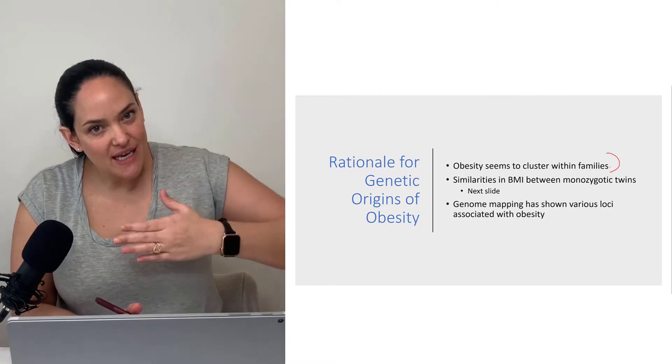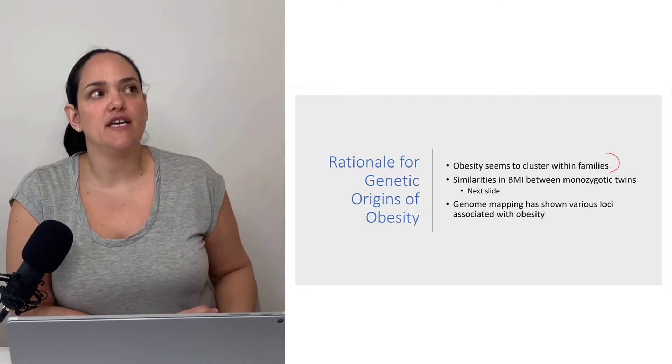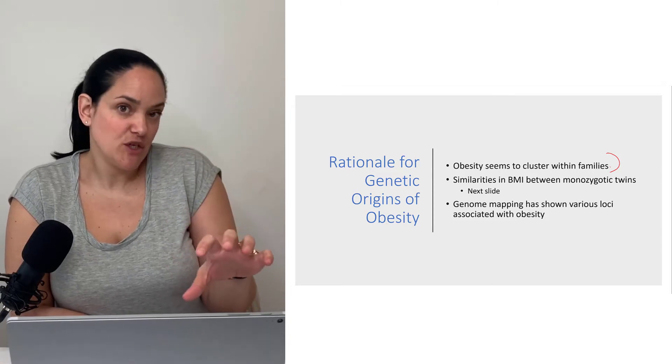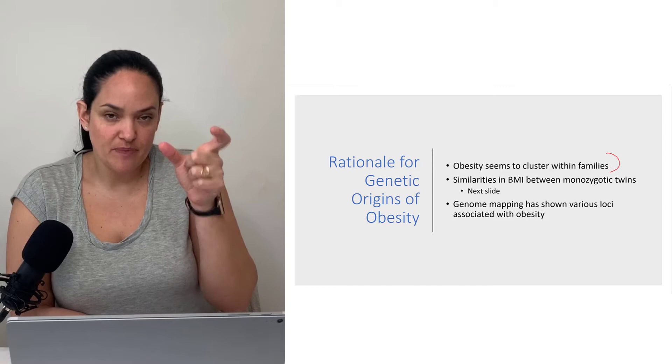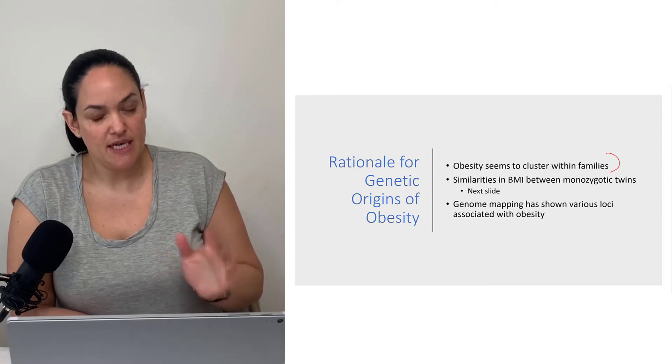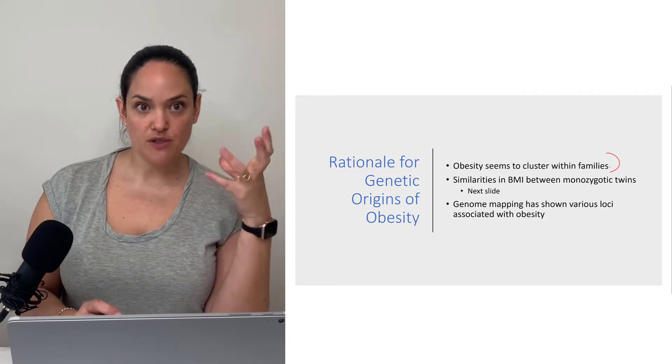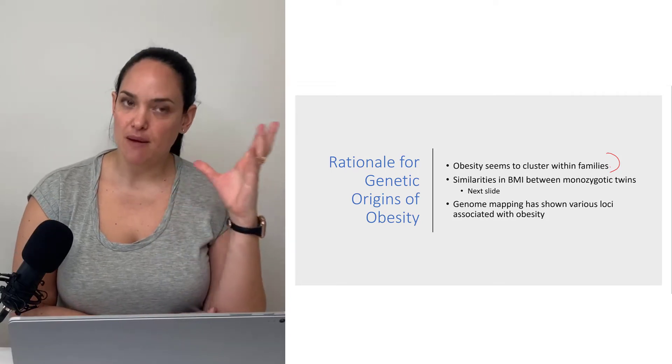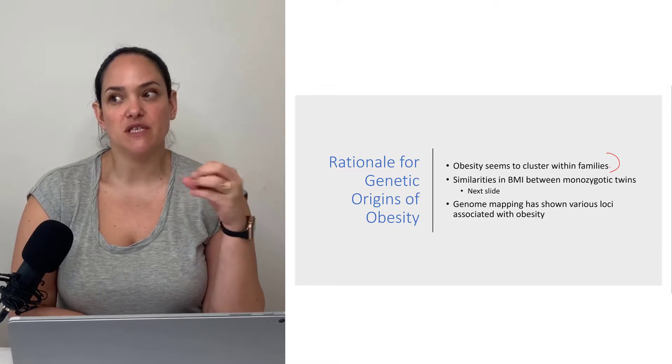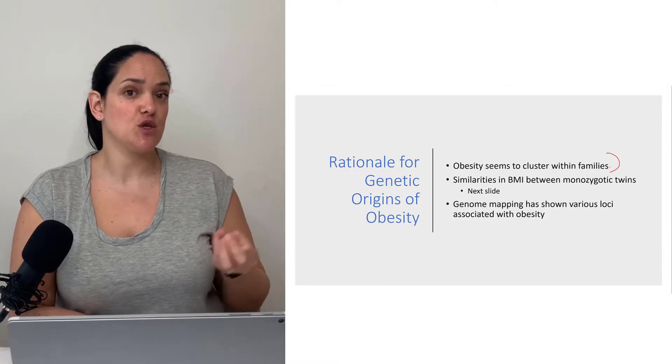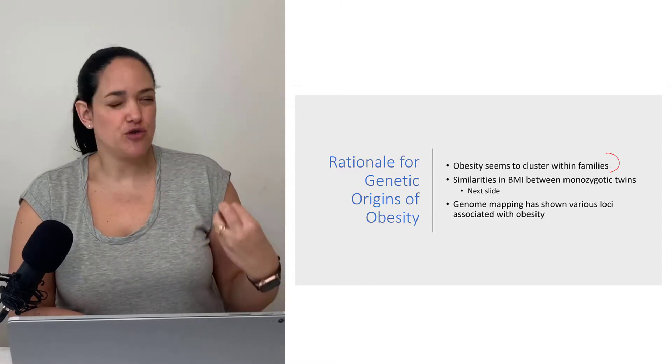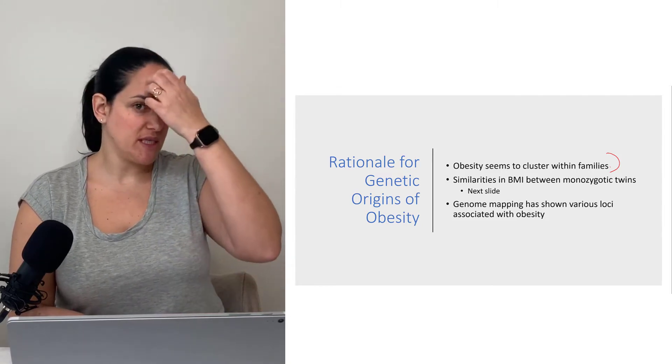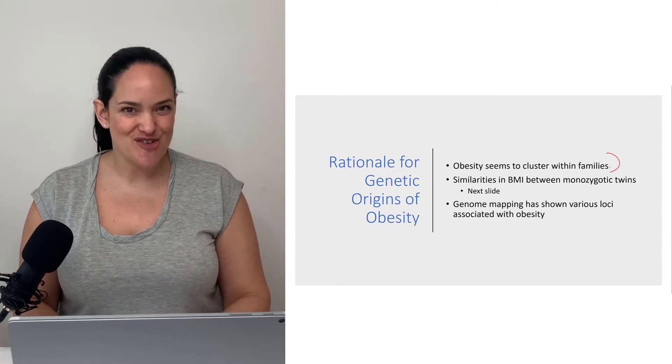Some of the evidence that grew from this is we started to look at twin studies to understand the genetic origins of obesity. In twin studies, especially identical twins, they have the exact same DNA. We're going to look at monozygotic twin evidence for obesity's genetic origins, and also explore genome-wide association studies which have looked at various populations around the world to find what genetic changes are more common in people with obesity compared to leaner people.